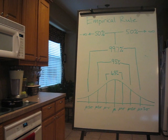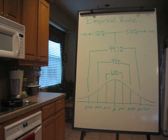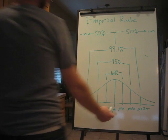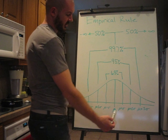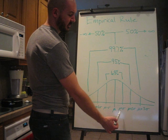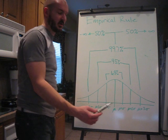I'm going to go over the empirical rule just a bit. Basically everything that I've written up there is all that I'm going to talk about. So if you have a standard normal curve with mu at an artificial zero, from mu to mu plus one standard deviation is going to be 34% of your curve.